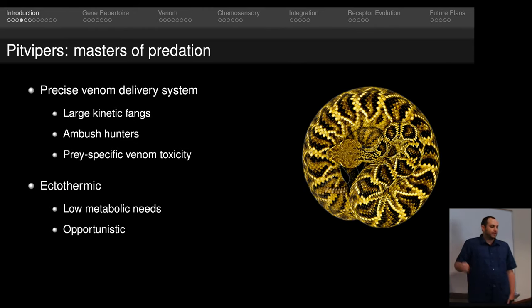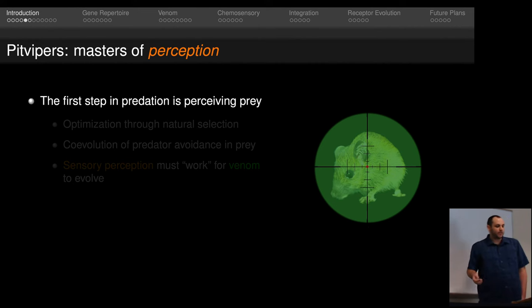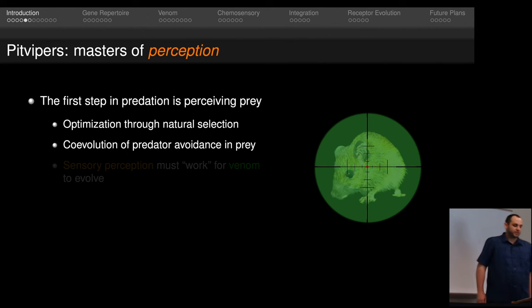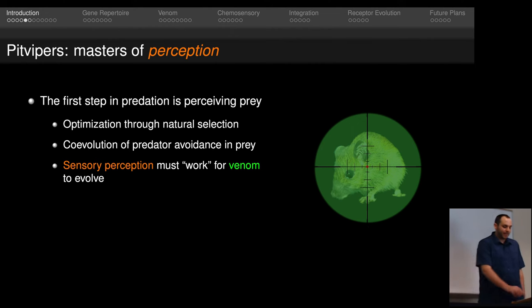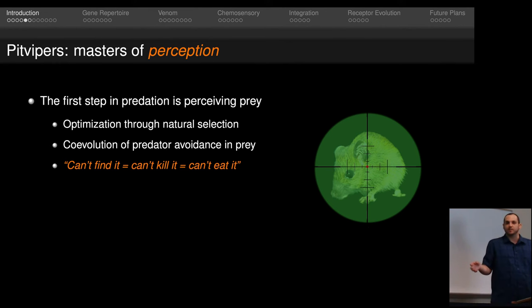I think everyone here today would agree that pit vipers are masters of predation. This is thanks in part to their precise venom delivery system, which includes large kinetic fangs. They're also successful ambush hunters with pretty specific venom toxicity. They're also ectothermic, which means they have very low metabolic needs, and this allows them to be opportunistic. But I would argue that what's probably more interesting is that pit vipers are masters of perception. After all, the first step in predation is perceiving your prey. Sensory perception must work in order for venom to evolve, and I like to illustrate this by saying if you can't find it, you can't kill it and you can't eat it, since failure at any point has the same fitness outcome, which is a hungry snake.